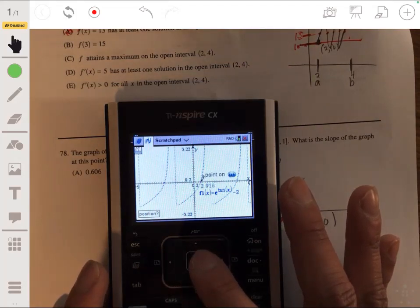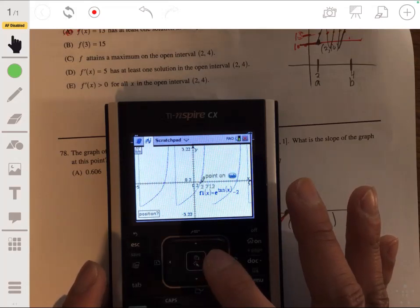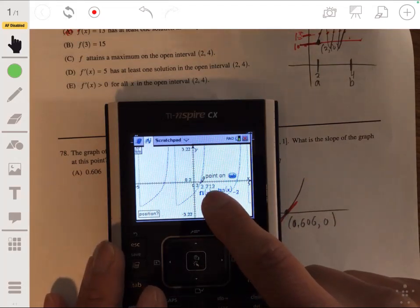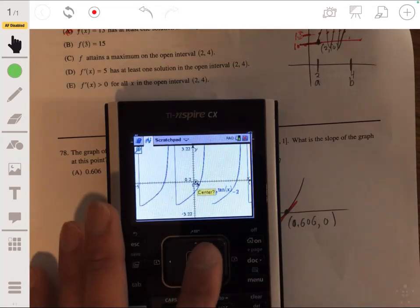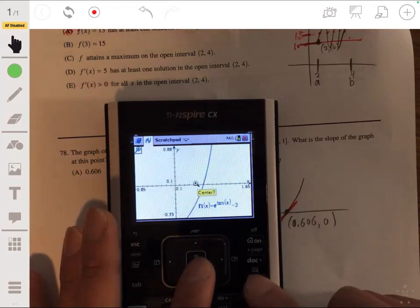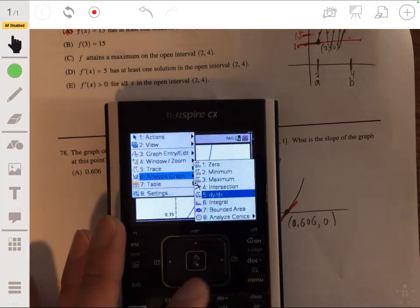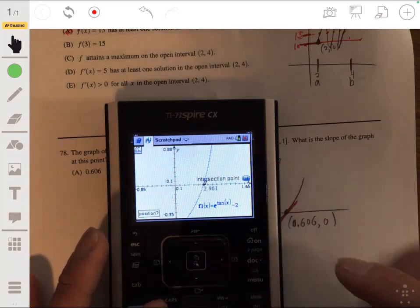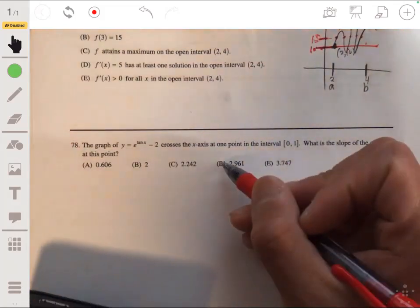Yeah, see, it won't be exact. Sometimes it's hard to get the exact value. But you can tell it's in the upper twos. But again, you can always zoom in if you want to be more precise and make sure you're hitting that point exactly. And see, you can see it's 2.961 exactly. So the answer is D.